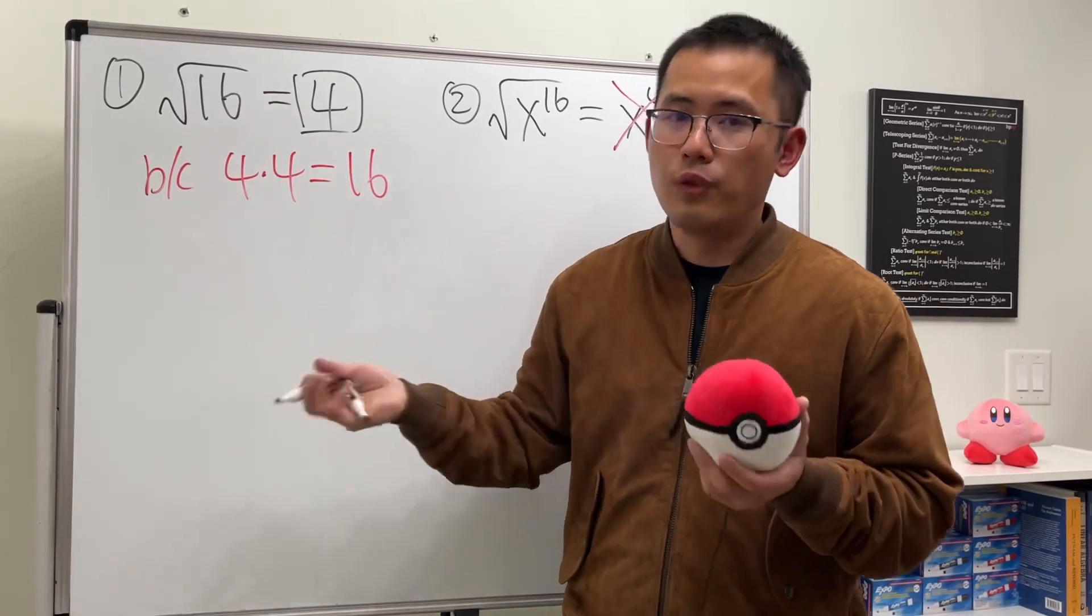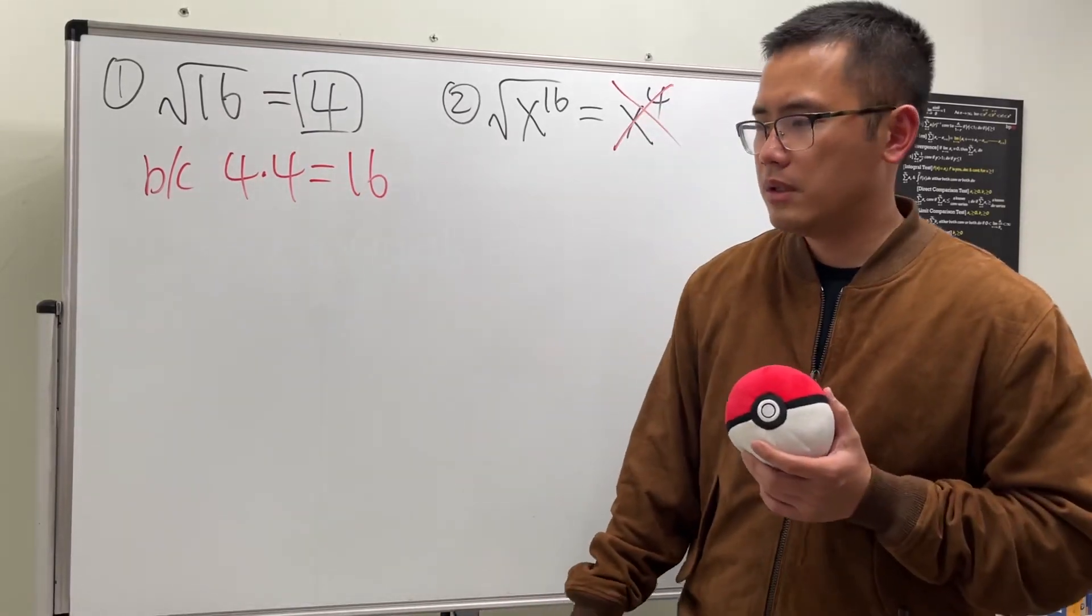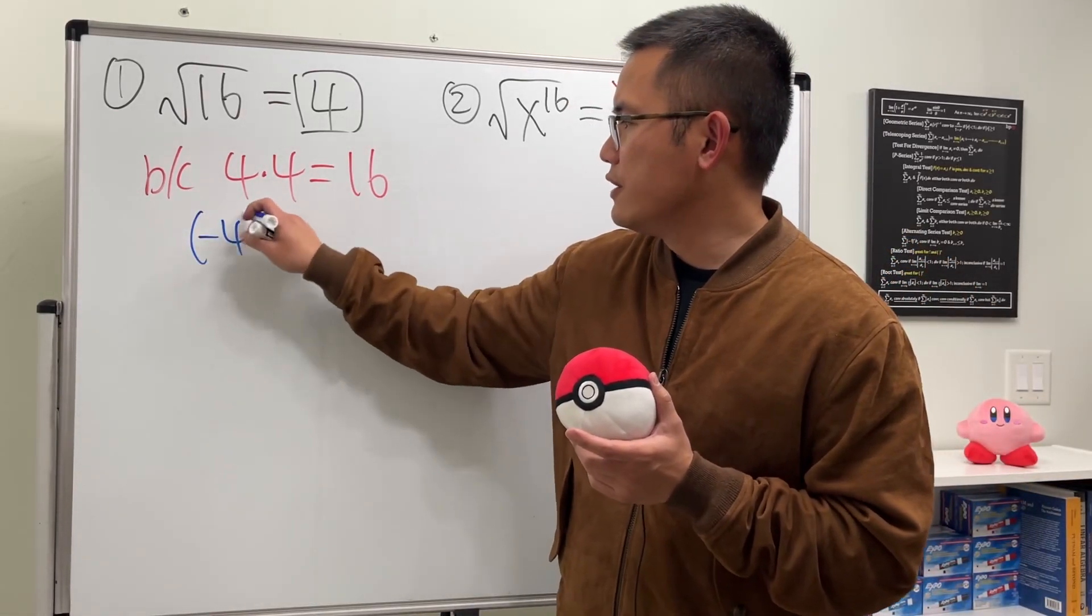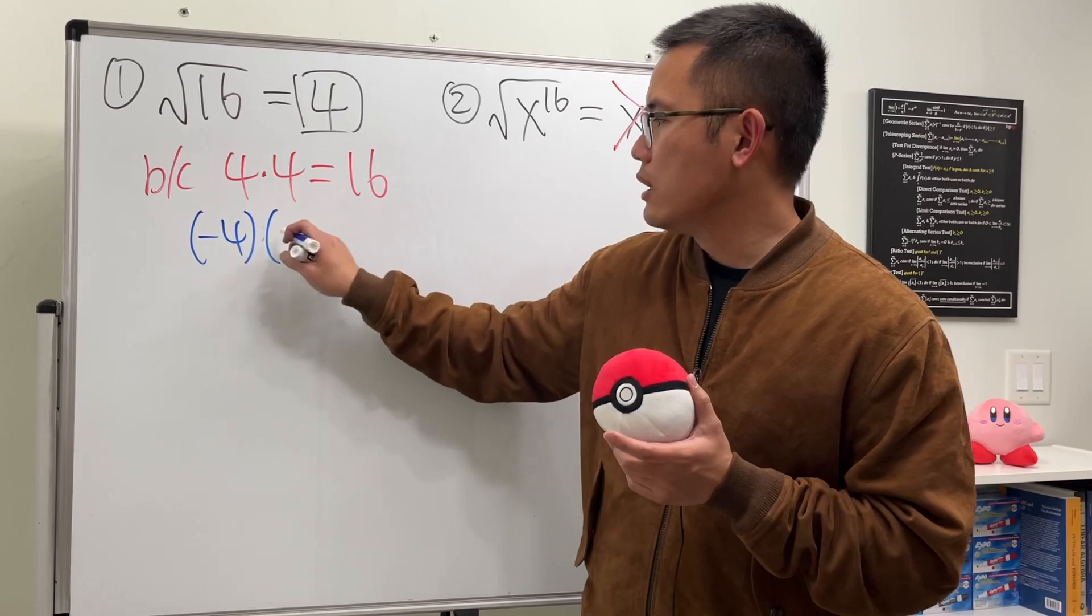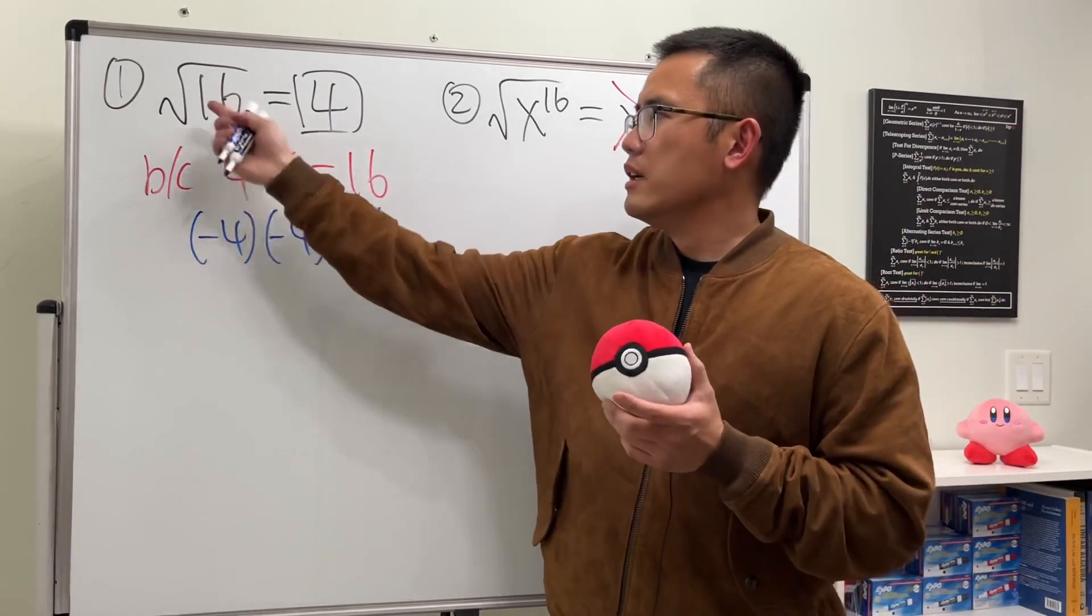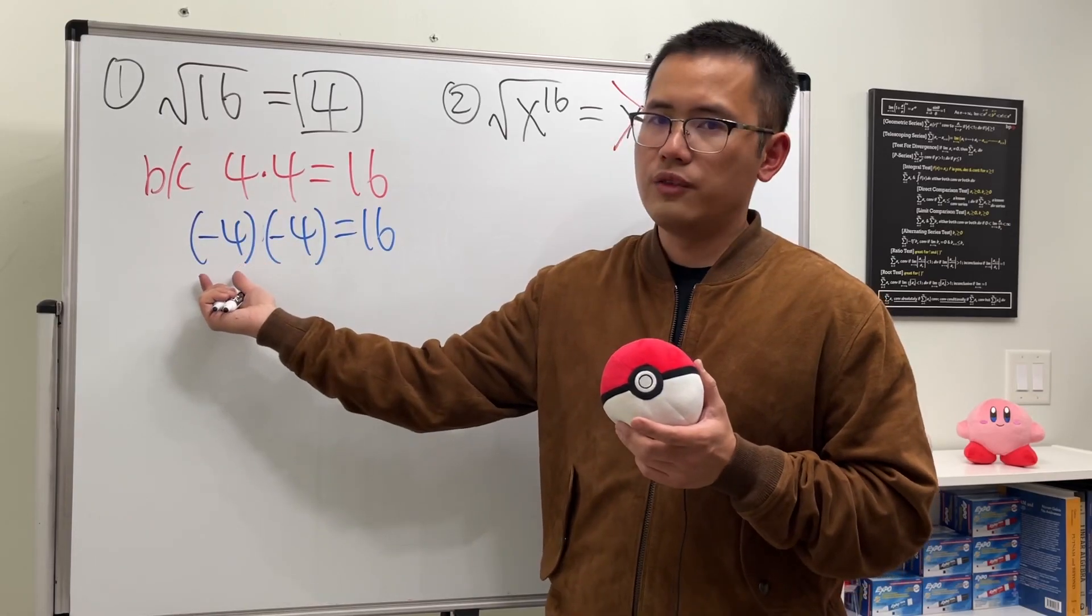But how about negative 4? Because we notice that when we have negative 4 times negative 4, this right here also gives us 16. So why don't we say square root of 16 is also negative 4?